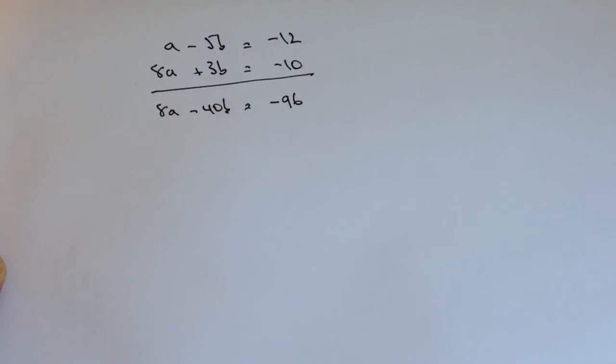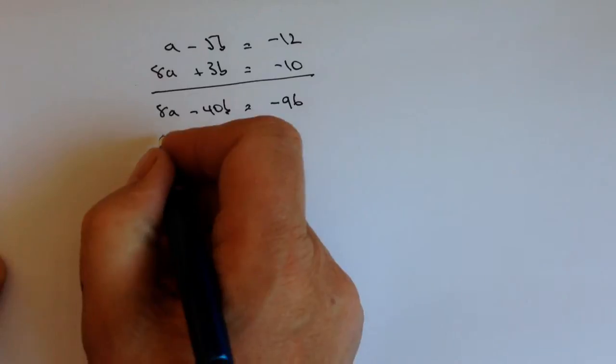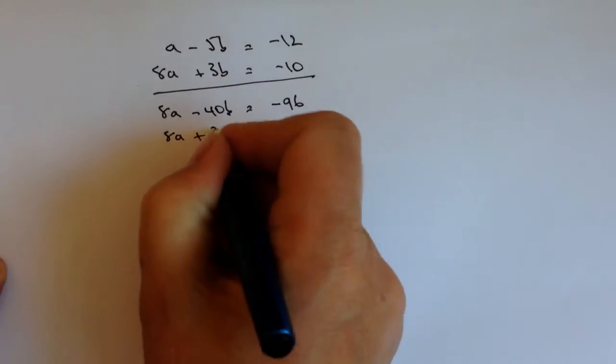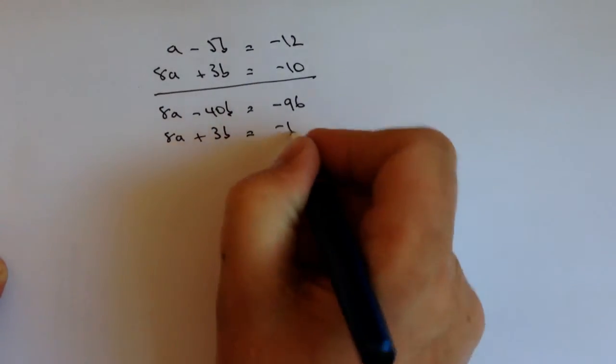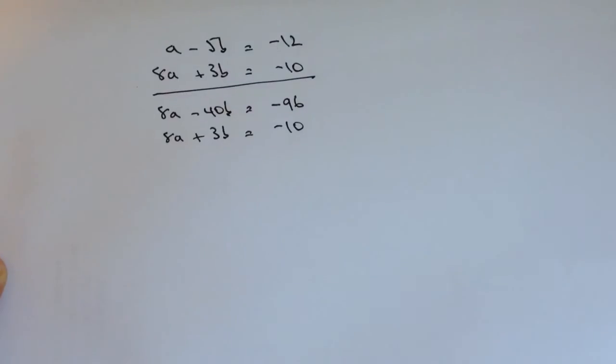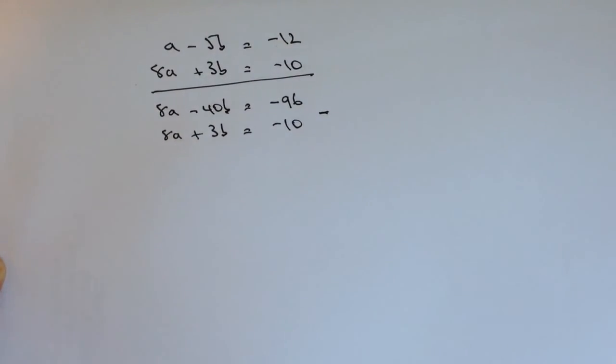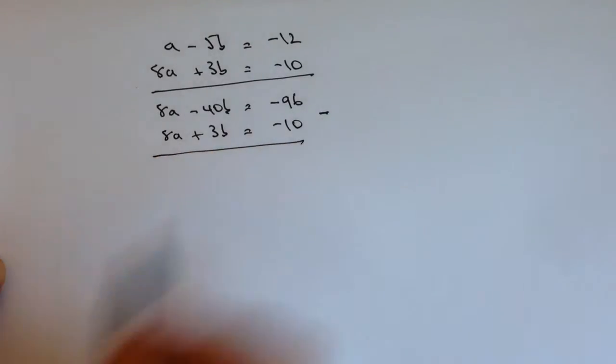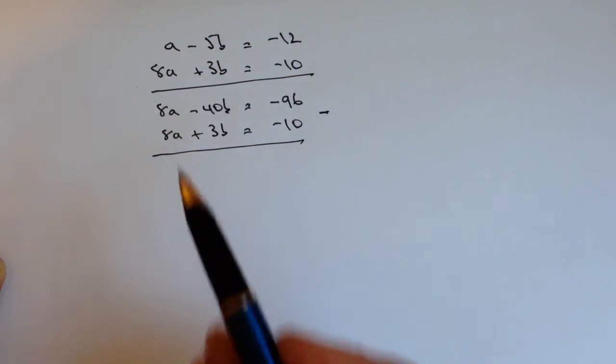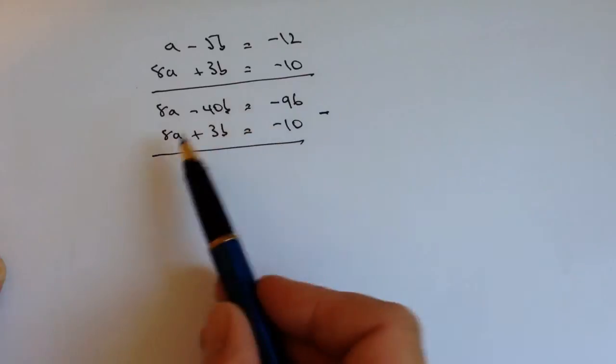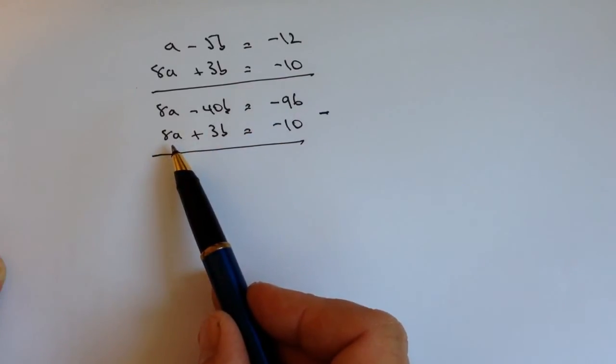All righty, and then the second equation I'm going to leave it as it is. So I've got 8a + 3b = -10. All right, now I'm in a position that if I take the bottom equation away from the top equation, it means I can lose the a terms altogether. So I've got 8a - 8a and that's going to give me nothing.